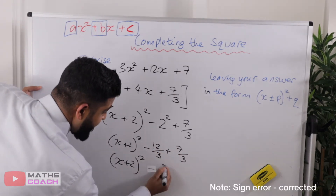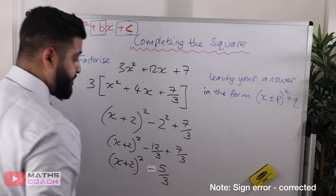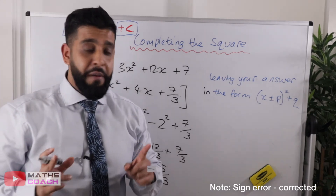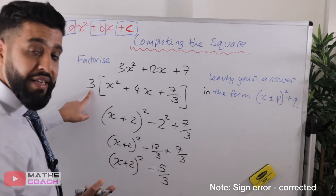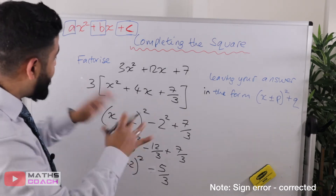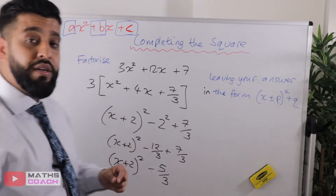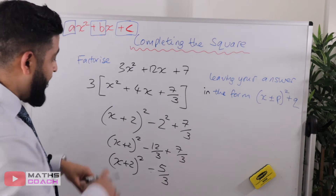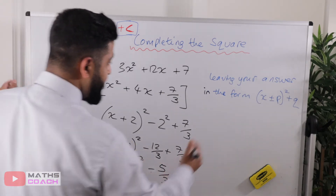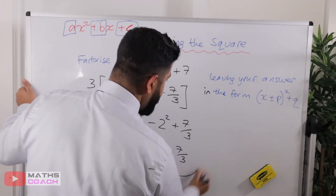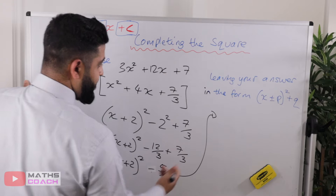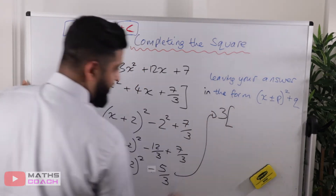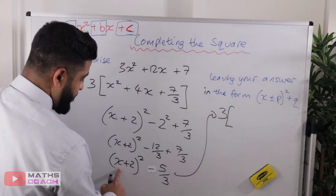So we have x plus 2 squared, and then minus 12 plus 7 which is minus 5 over 3. But we're not done — because we've been ignoring that 3 that we factorized out at the beginning. We are now going to reintroduce it back into our working out.